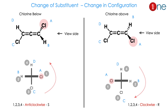Now let us see the change of chlorine atom position — a change of substitution. What will happen? There will be a change in configuration. In the left structure, chlorine is below; in the right structure, chlorine is above. If you analyze the configuration with the same viewing side, the left side gives anti-clockwise (S). Once you change the chlorine position, the priority changes and you get a clockwise direction (R). So: change the atom, change the configuration. Be careful with that.